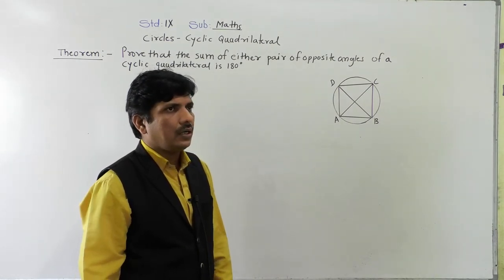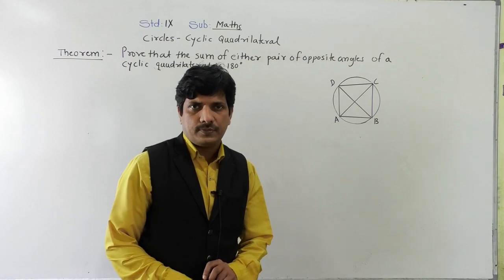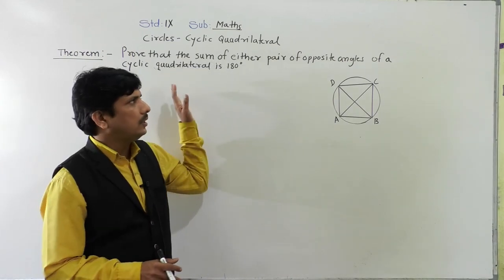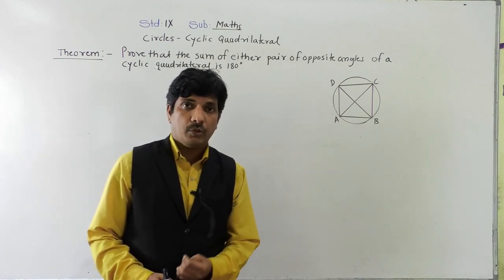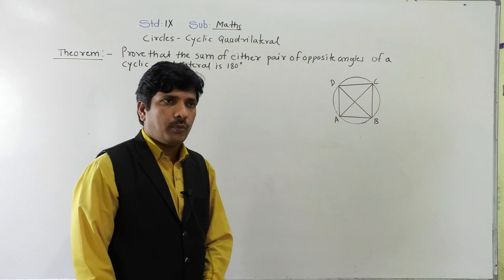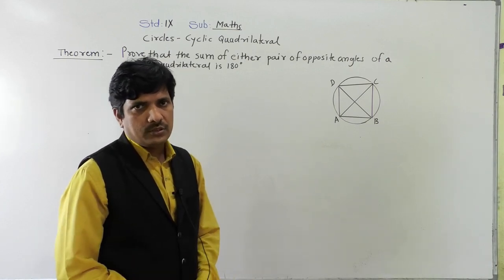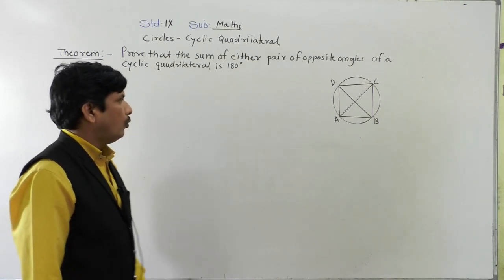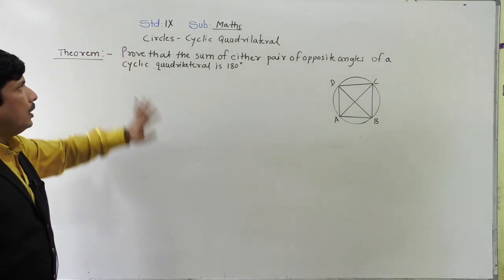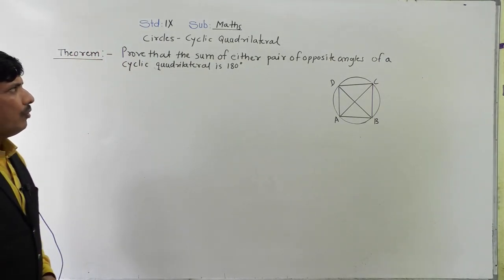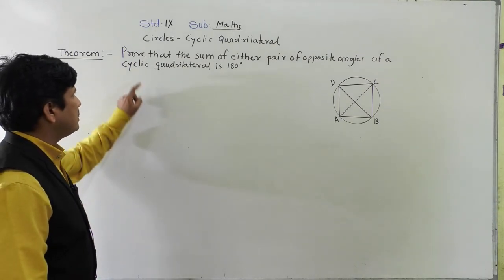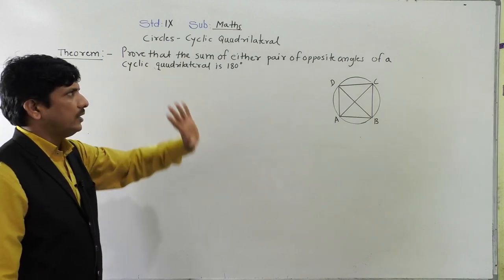A cyclic quadrilateral has some properties. We are going to study all the properties through theorems. So, first theorem — an important theorem. This theorem is in class 10th also and the properties we are going to use in the sums. See carefully: the statement of theorem number one is — the sum of either pair of opposite angles of a cyclic quadrilateral is 180 degrees.